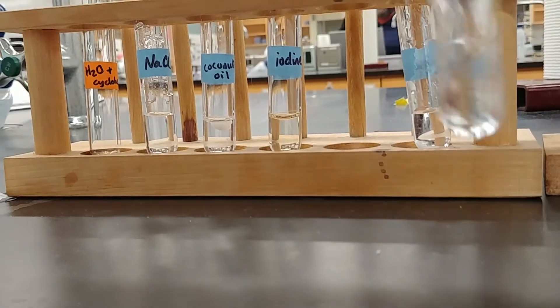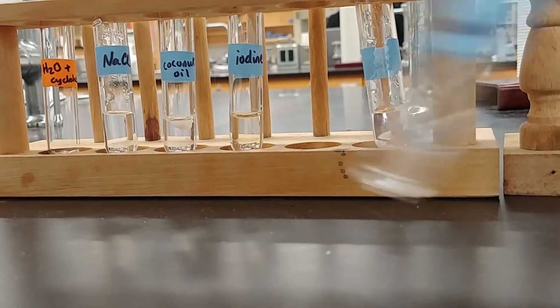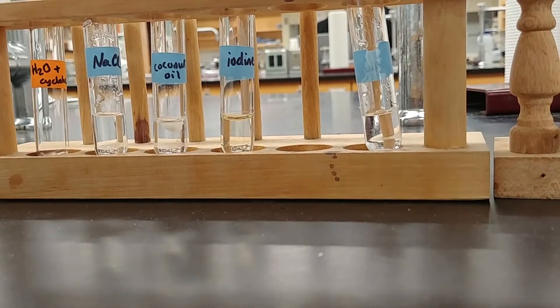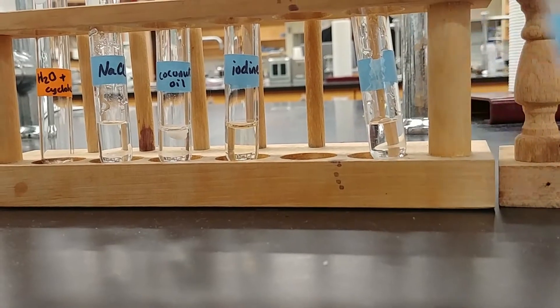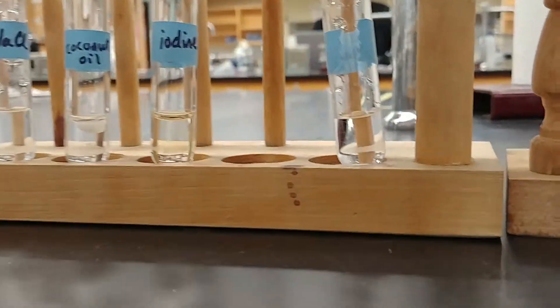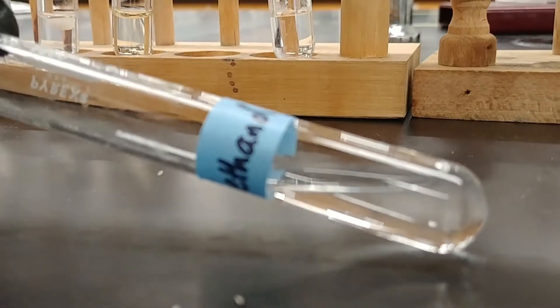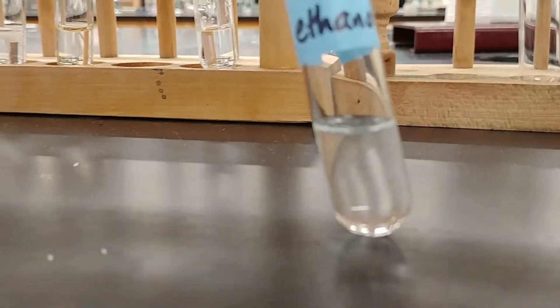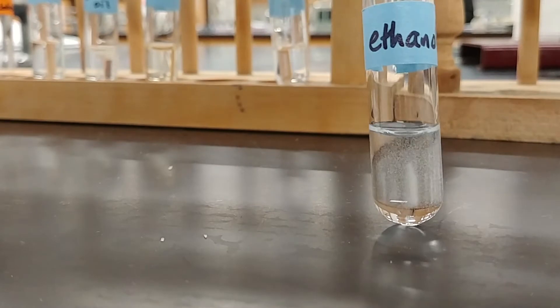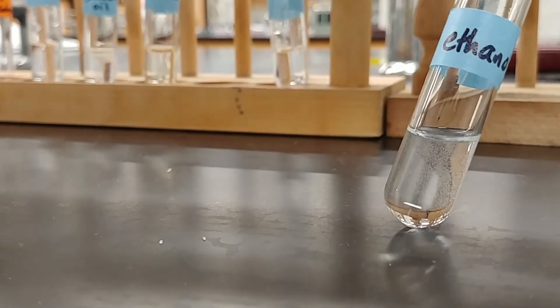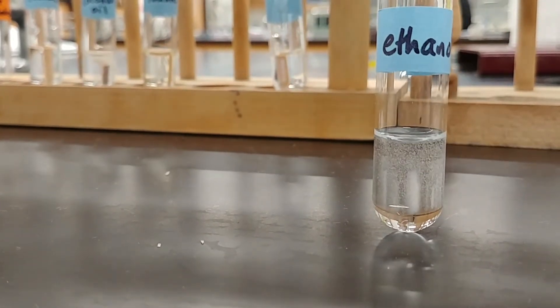And then we have ethanol and water. Now in order to tell whether these are mixed, we are going to look at this liquid very closely to see if it is one single liquid or if it's two separate layers. And so tilting the test tube like this kind of helps us look for any sort of double meniscus and see if we actually have two layers or just a single layer.